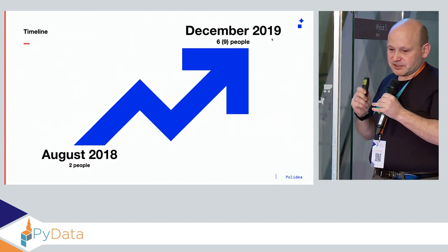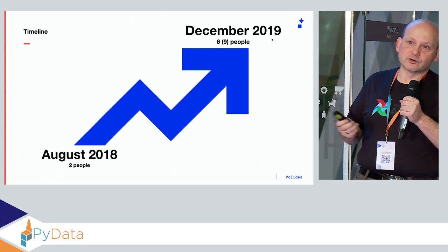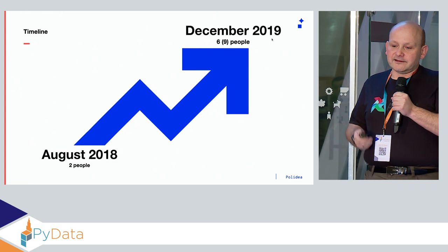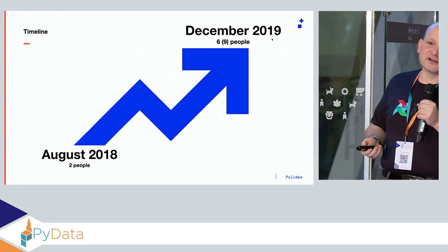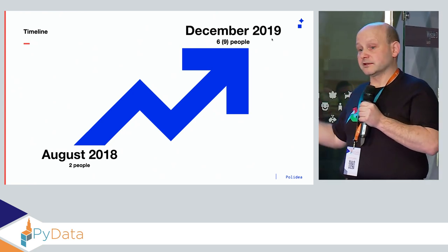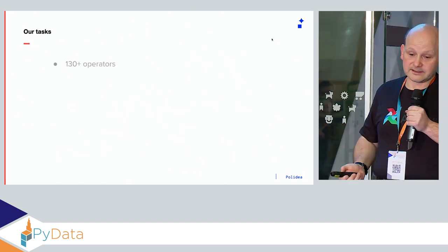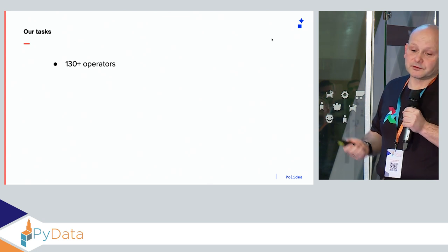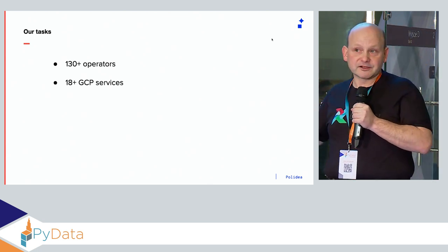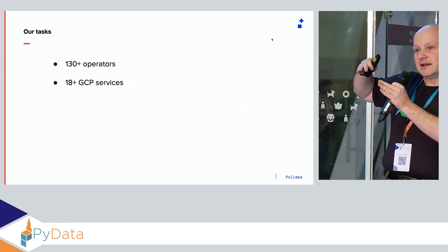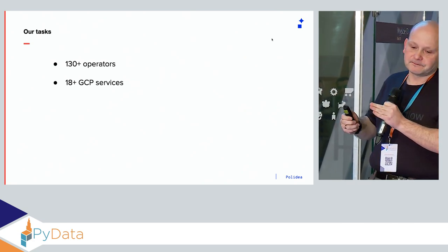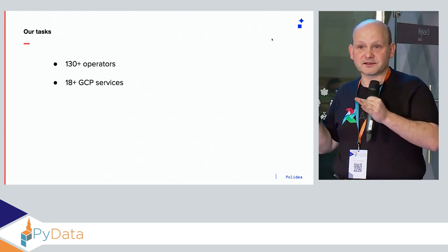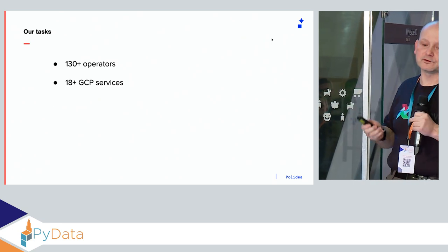Polydia and Apache Airflow: we started in August 2018 with two people — myself and a colleague. Now at December 2019, we have six people, and nine people have worked on the team over time. We developed 130 operators — the parts that connect Airflow to external services — for 18 Google Cloud Platform services. That was our main customer focus.